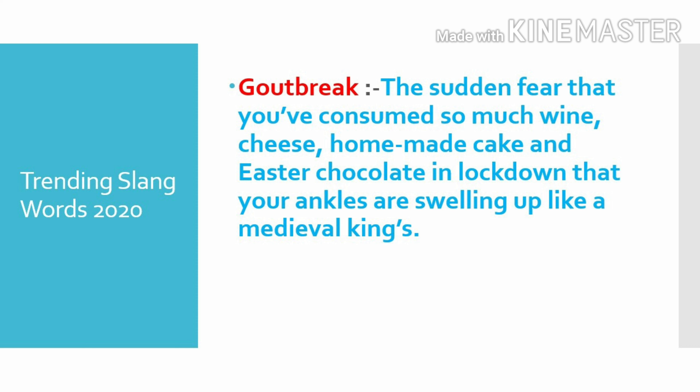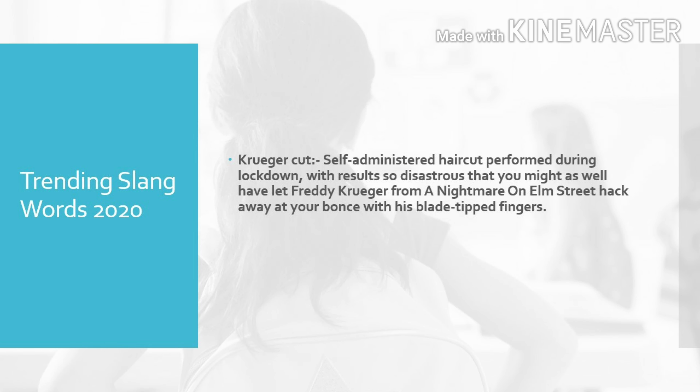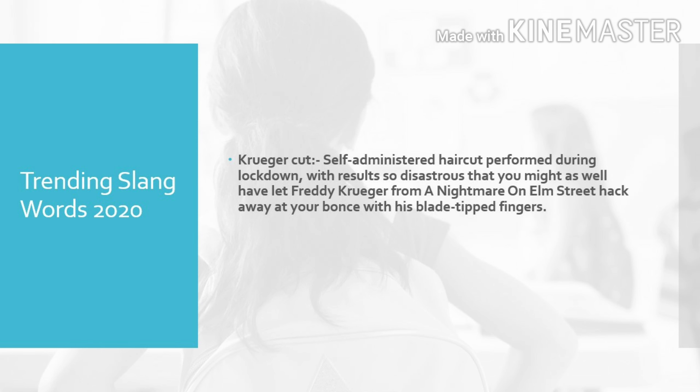Next slang: goutbreak — the sudden fear that you have consumed so much wine, cheese, homemade cake, and instant chocolate in lockdown that your ankles are swelling up like a medieval king's. Next funny slang: Krueger cut — a self-administered haircut performed during lockdown with results so disastrous that you might as well have let Freddy Krueger from A Nightmare on Elm Street hack away at your hair.